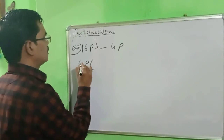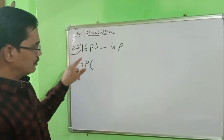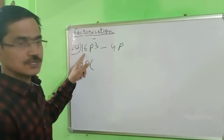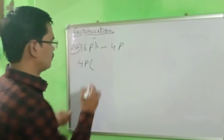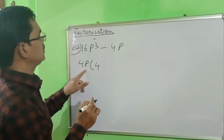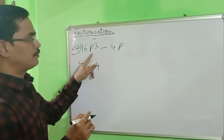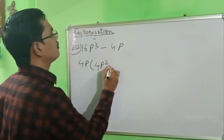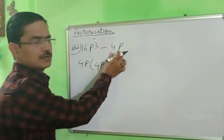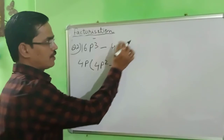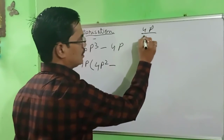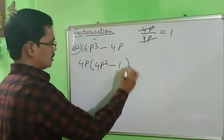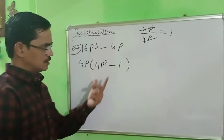Taking 4p as common — if you divide 16 by 4 you get 4, and p divided by p gives 1 for p, and p² divided by p gives p. So after taking 4p common, we are left with 4p² minus 1. So we will write 4p(4p² minus 1).